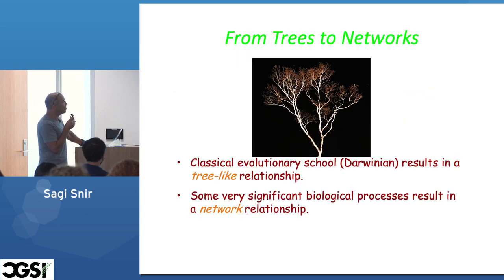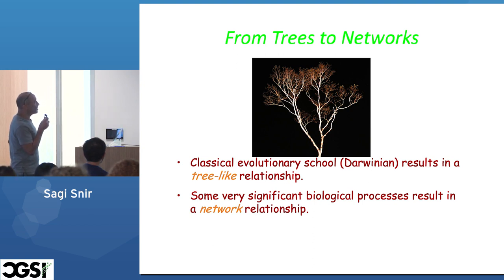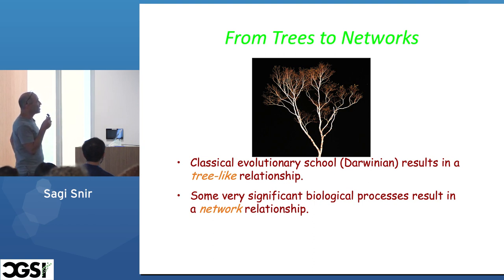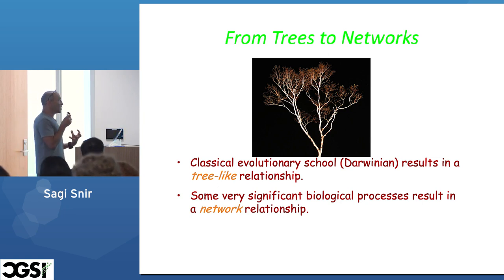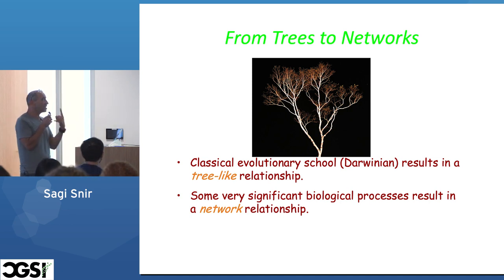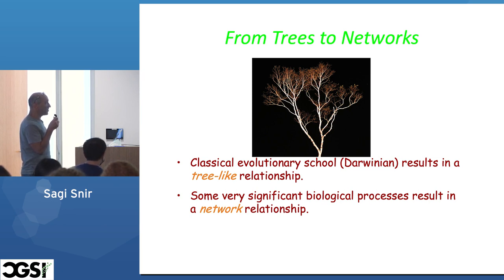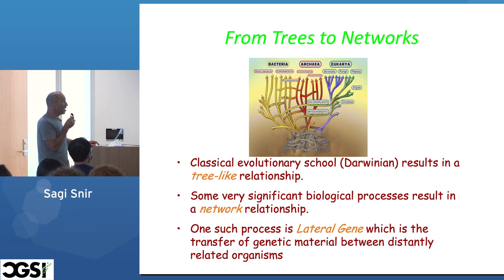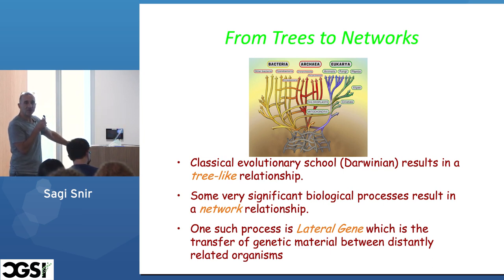In more modern approaches, we move from trees to networks. The classical Darwinian evolutionary school results in a tree-like relationship, meaning every organism has a single ancestor. However, some very significant biological processes result in a network relationship, such as lateral gene transfer, which is the transfer of genetic material between distantly related organisms.